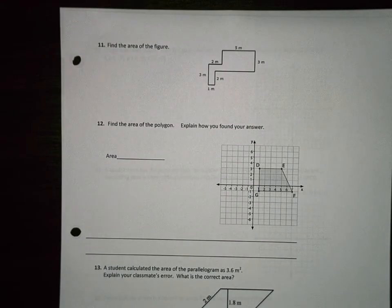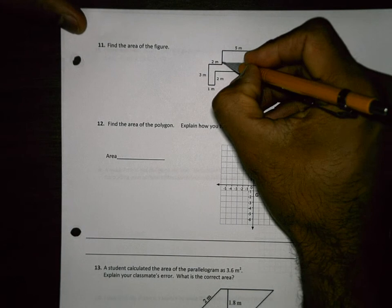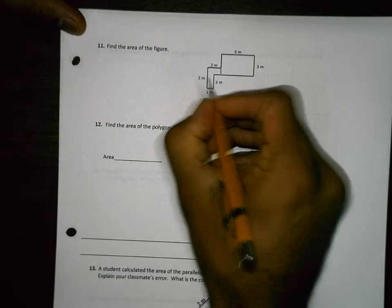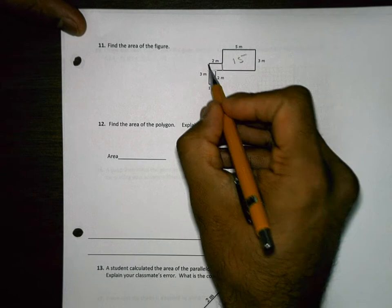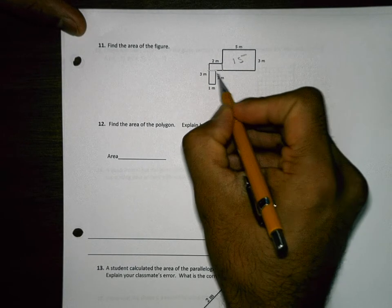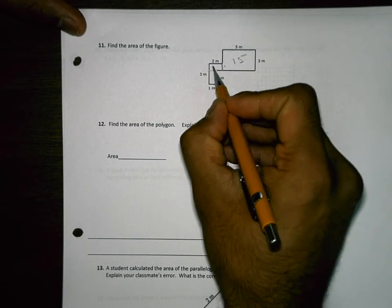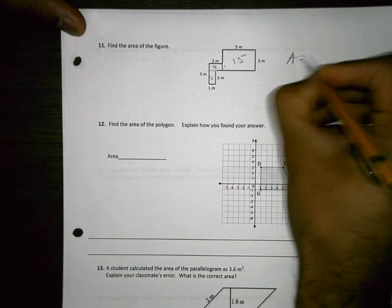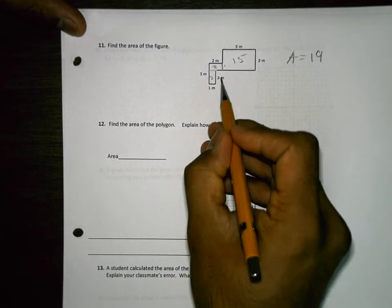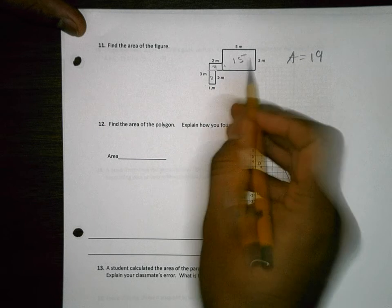Find the area of the figure. So you have to cut it up. I'll go right there and right there. So the area of this one is 15. Now be careful. This is 2, this whole thing is 3, this is 1. So this is a 2 by 1, so that's 2. And that's a 2 by 1, so that's 2. So the area is 19 total.